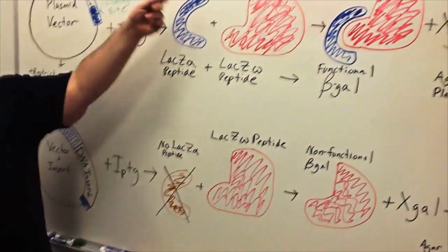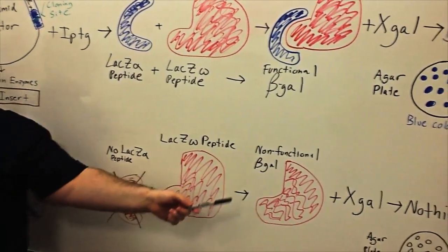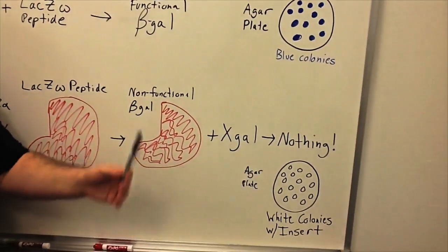Thus, when the bacterial genome creates the LAC-Z omega peptide, there is a non-functional beta-gal made. Then, in the presence of X-gal, nothing happens. There's no cleavage.